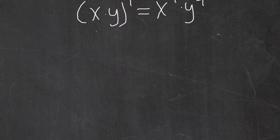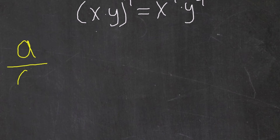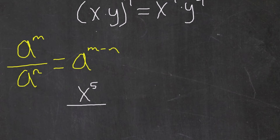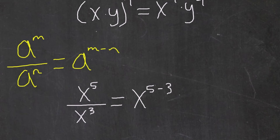The law of exponents tells us that if I have the same base written as a fraction, but they each have different exponents, then we can rewrite this as a single expression by rewriting the base and subtracting the exponents. For example, let's say I had x raised to the fifth power over x raised to the third power. The law of exponents tells us that we can rewrite this as x raised to the 5 minus 3, which would give us a power of 2.